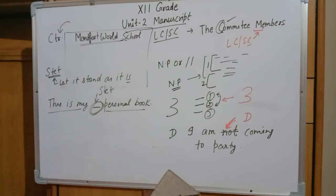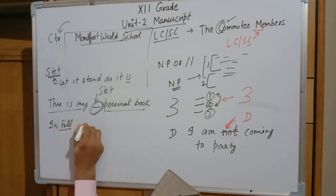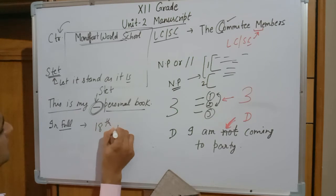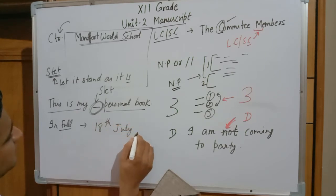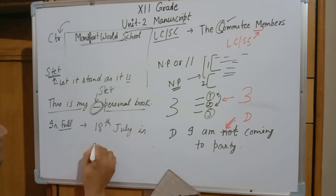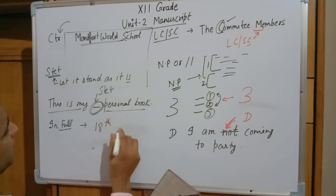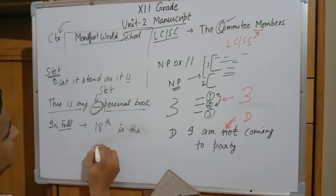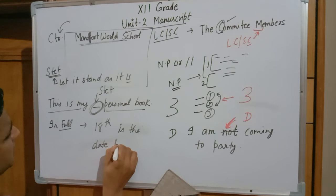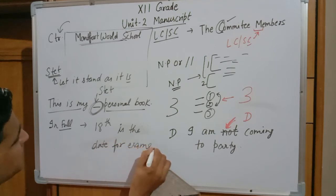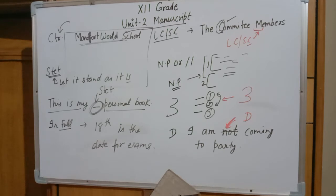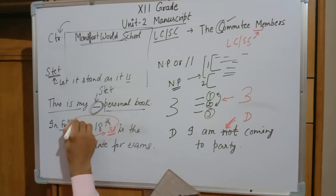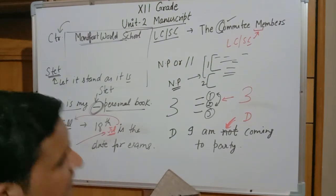The next sign is In Full. For example, if I write '18th July' or '18 is the date for exam' without specifying the month, it is not clear — from January to December, 18 will appear 12 times. So you need to write in full, such as '18 June' or '18 July.' This error is known as In Full — you must write the complete information and not leave content abbreviated or unclear.